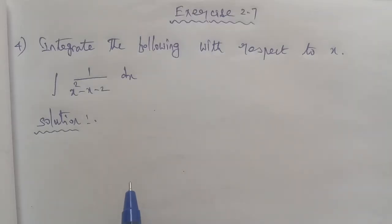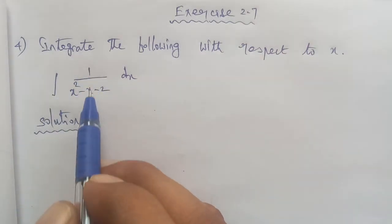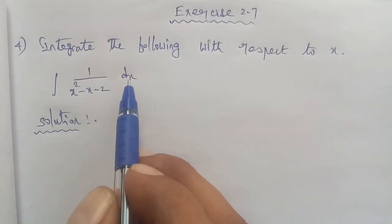Hi students, I am Gopinath. 12th Business Maths Exercise 2.7, question number 4: Integrate the following with respect to x: integral of 1 by (x square minus x minus 2) dx.